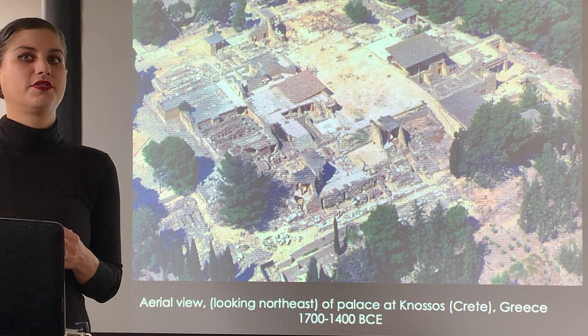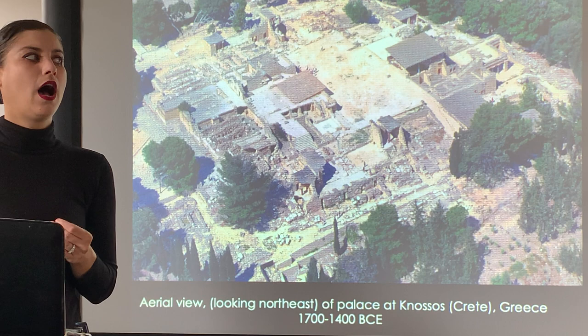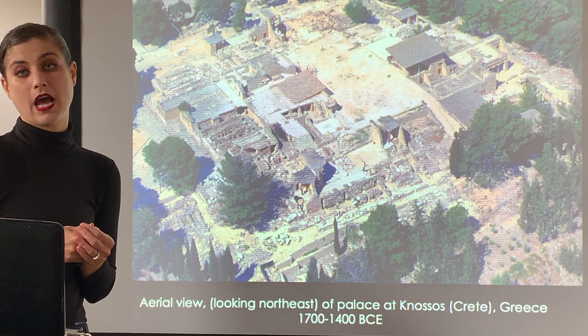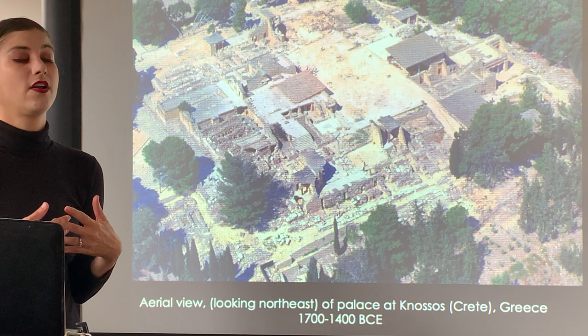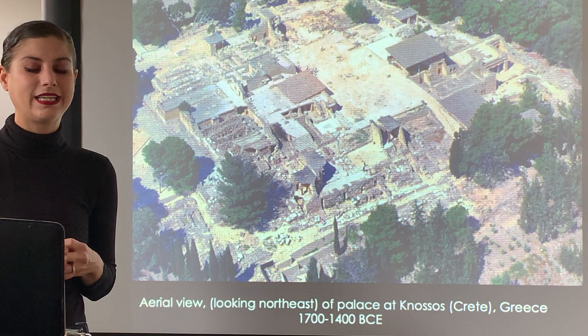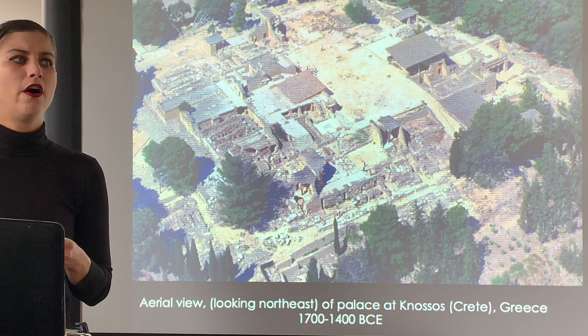The Palace of Knossos on the island of Crete is where we're going to look at a lot of Minoan art and architecture. The way this palace was discovered is fascinating - a historian was following the mythological stories, reading Homer's Iliad and Odyssey, which discuss King Minos and the Minotaur.